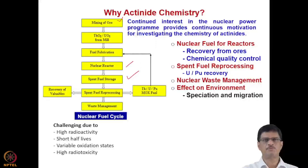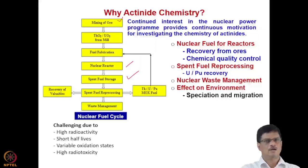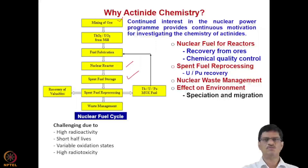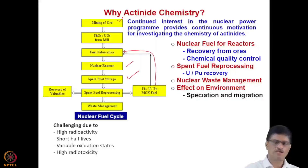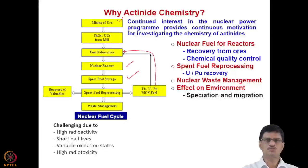Afterwards, spent fuel reprocessing is done, where valuables like uranium and plutonium are recovered. In the case of HWR fuel, thorium and uranium-233 are also recovered. Uranium and plutonium can then be used as mixed oxide fuel (MOX fuel) and returned for fuel fabrication and back to the reactor. This is the closed nuclear fuel cycle, which will be discussed subsequently.